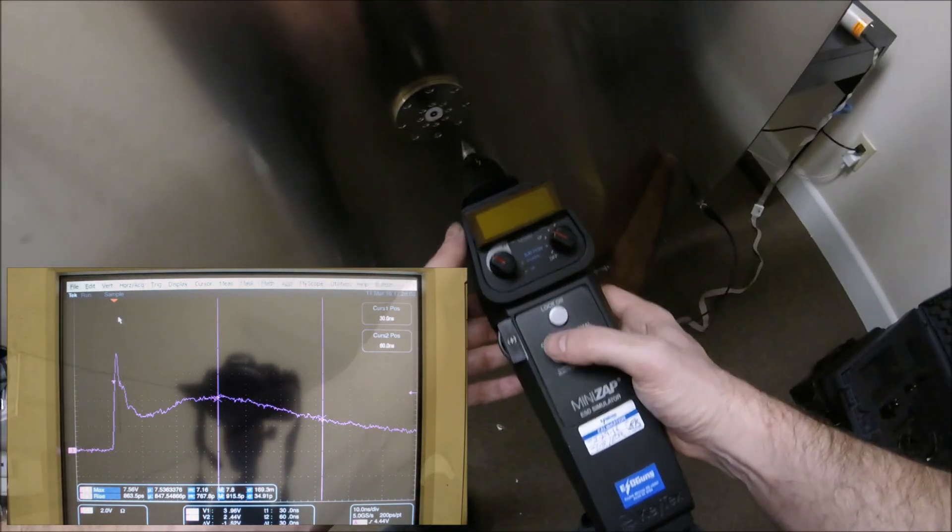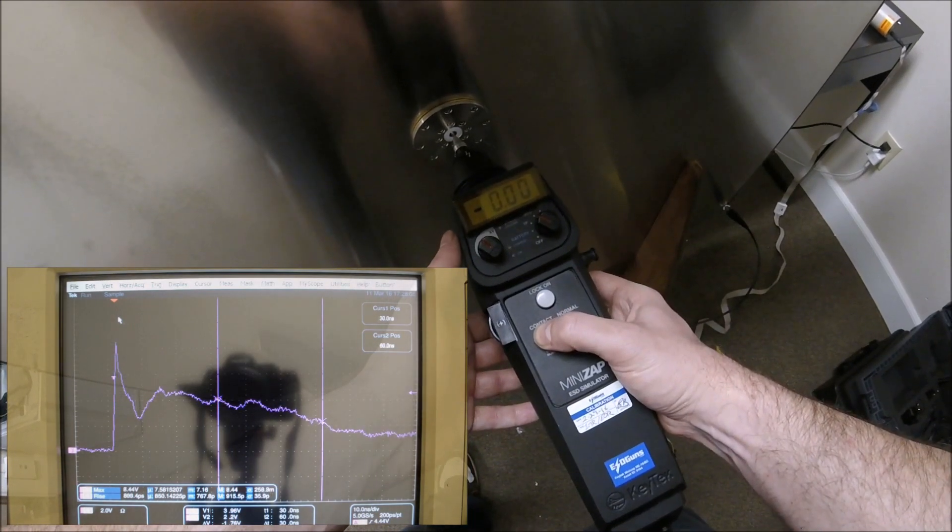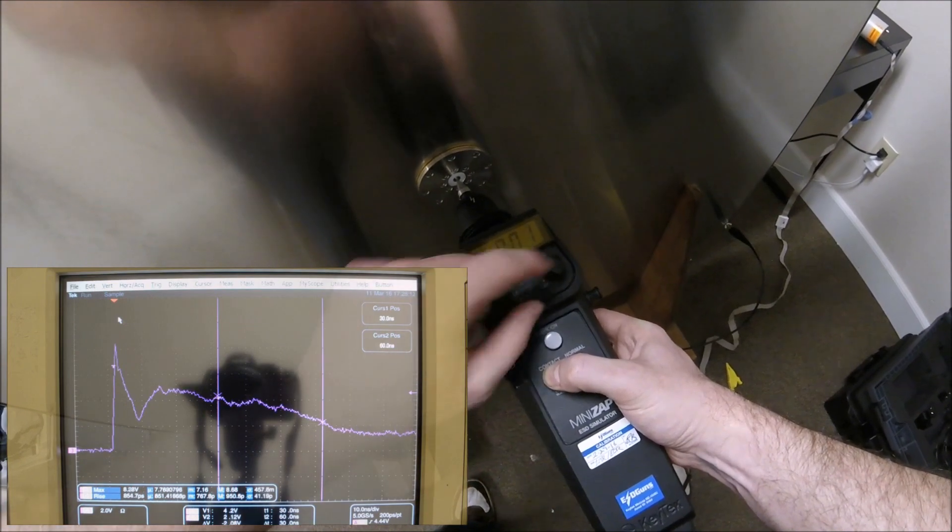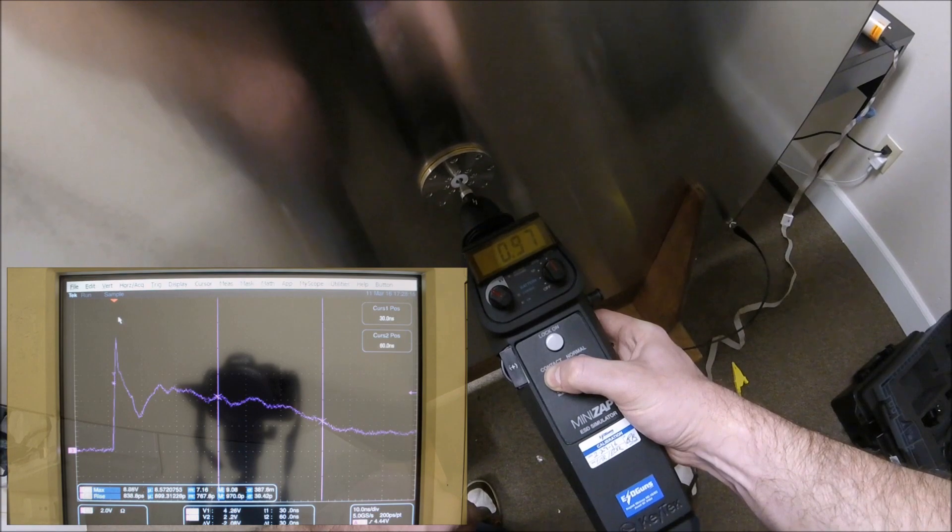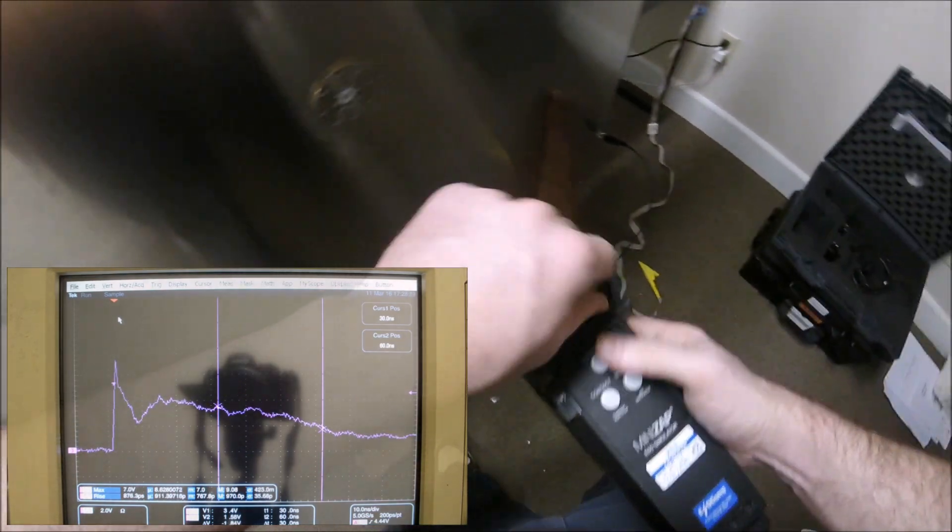The MiniZap and the ESD3000 are the only two units that come with the capability to run through the supplied AC adapter, whereas all the other units you can do this, but you would have to buy an add-on accessory to run it through AC. Otherwise, they run on battery.